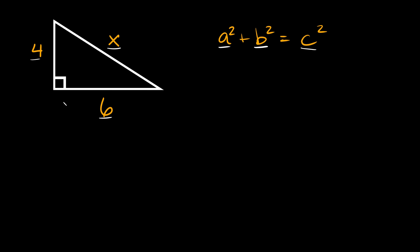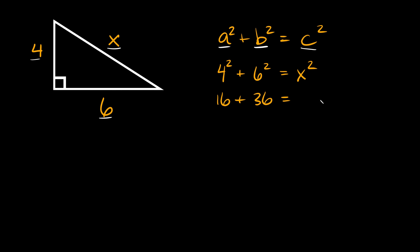So let's fill in these values for a, b, and c. This is going to be four squared plus six squared is equal to x squared. Four squared is equal to 16, six squared is equal to 36, and that's equal to x squared. 16 plus 36 is equal to 52, so we get 52 is equal to x squared.